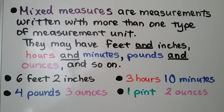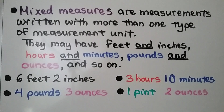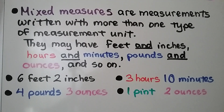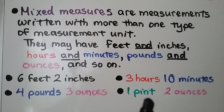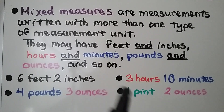Mixed measures are measurements written with more than one type of measurement unit. They may have feet and inches, or hours and minutes, pounds and ounces, and so on. Here are some examples of mixed measures: six feet two inches, three hours ten minutes, four pounds three ounces, one pint two ounces. These are all mixed measures.